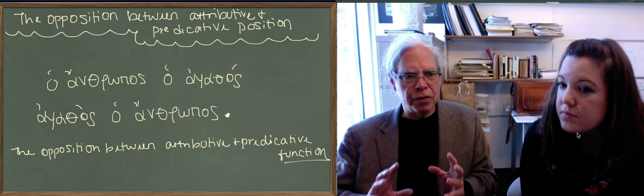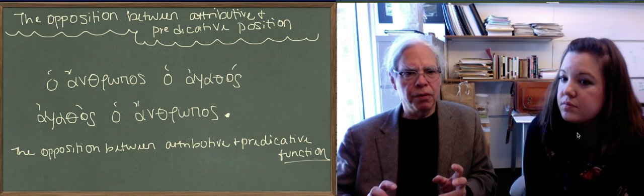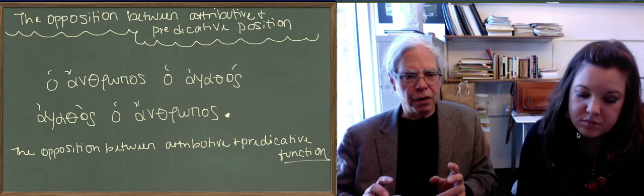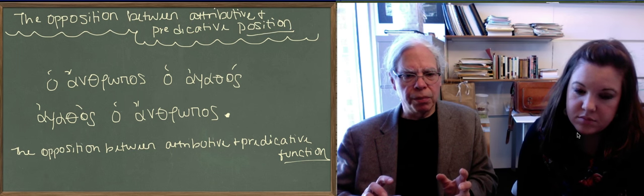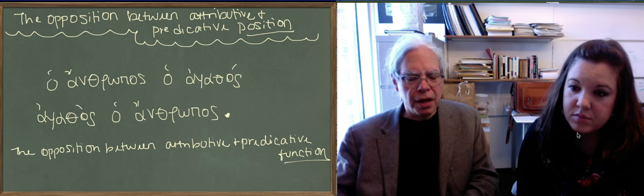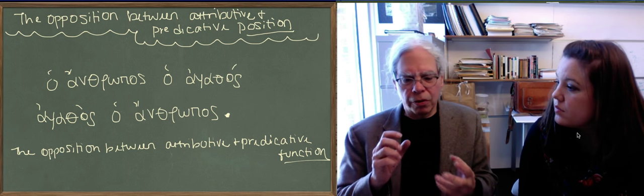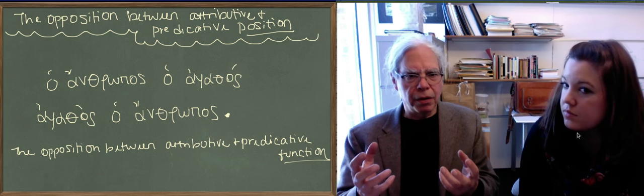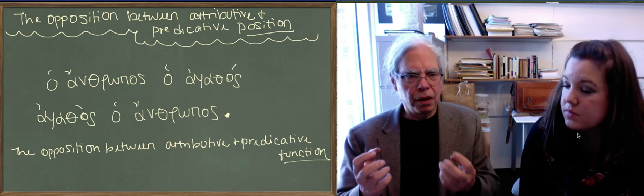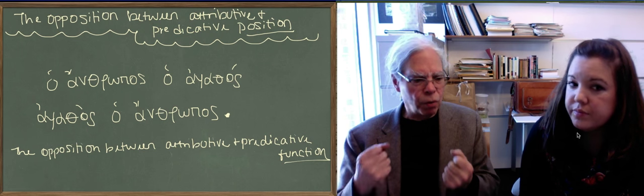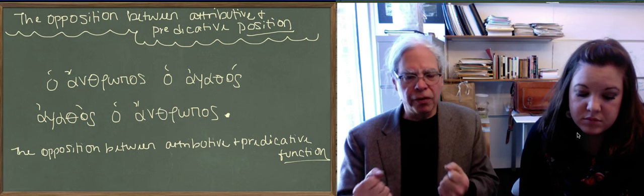What Balisi has written down is the opposition between attributive and predictive position, and underneath it, the opposition between attributive and predictive function. There's the formal aspect, what is attributive position and what is predictive position, and then there's what they mean, what their function is.